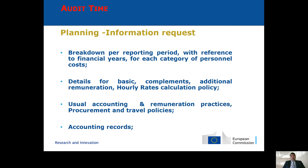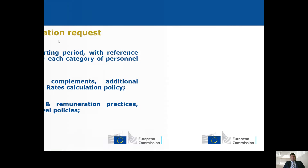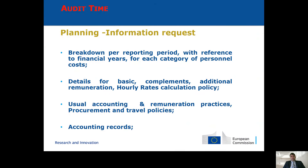Let's see what type of documents you request and use to perform a CFS. You will need a breakdown per reporting period with reference to financial years for each category of personal costs — for example employees, natural persons, and so on. Then you need details for basic remuneration, complements and additional remuneration, the hourly rates calculation policy, and other policies like remuneration practices, usual cost accounting, procurement policy, and travel policy, as well as the accounting records.